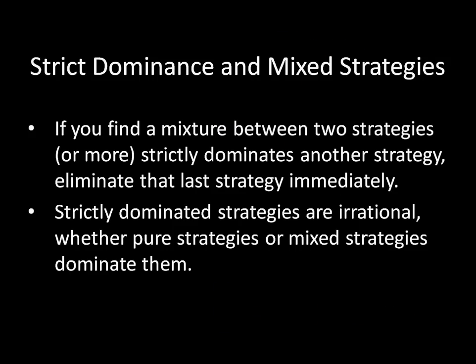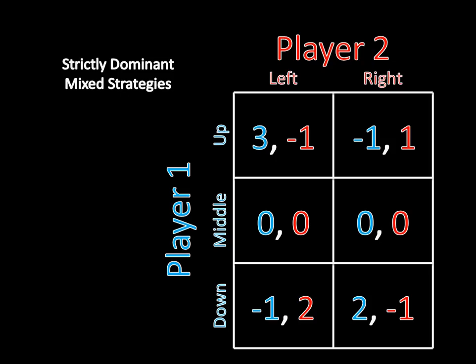Let's talk a little bit more about strict dominance and mixed strategies. If you find a mixture between two strategies — or potentially more in a larger game — and that mixture strictly dominates another strategy, then you can eliminate that last strategy immediately. The reason for this is that strictly dominated strategies are irrational. It doesn't matter whether a pure strategy or a mixed strategy strictly dominates them — it still doesn't make sense to choose that strictly dominated strategy when you could do better regardless of what the other player is doing.